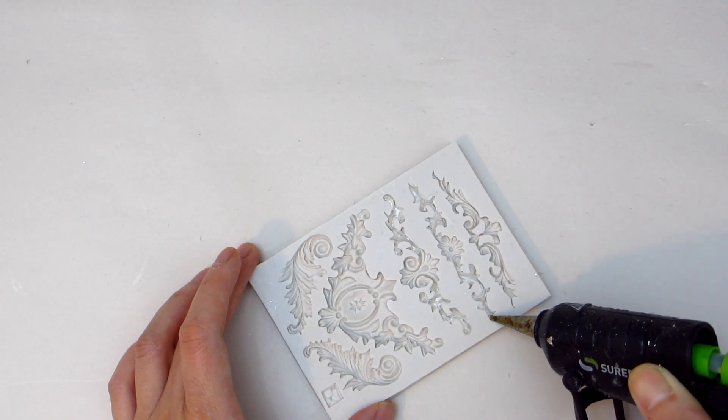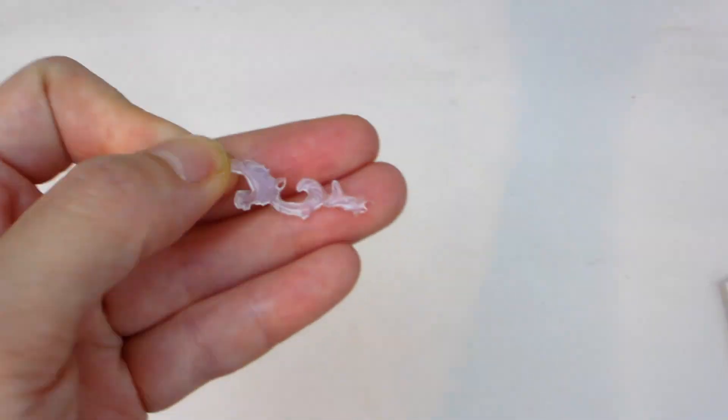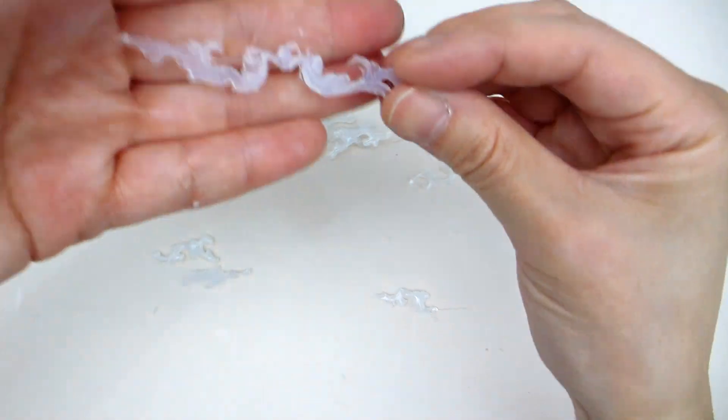Once the hot glue has settled and cooled down, the hot glue pieces can be released and removed from the molds with your fingers. Here I am assembling several pieces into one long piece to create a vine.